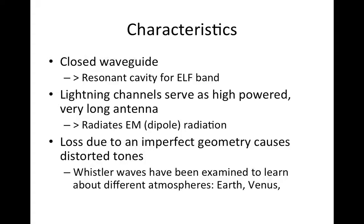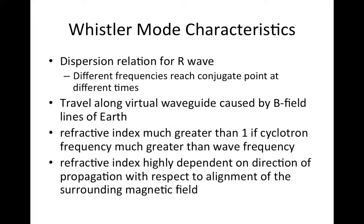Whistler waves have also been examined to learn about different atmospheres, such as Earth, Venus, and even Jupiter. How these were derived was by using the right-handed circularization plane wave.